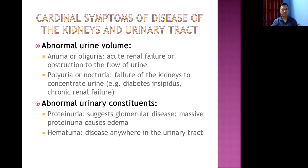Another cardinal symptom of urinary tract disorders involves abnormal urinary constituents — protein and blood present in the urine. This may be seen in glomerulonephritis. Hematuria is a very common feature that can occur in disorders anywhere along the urinary tract.